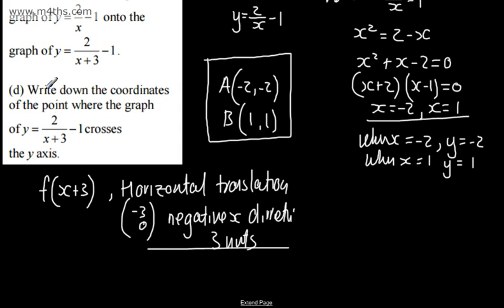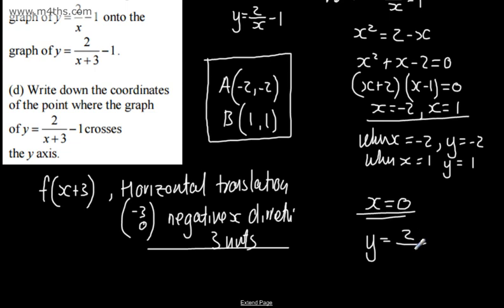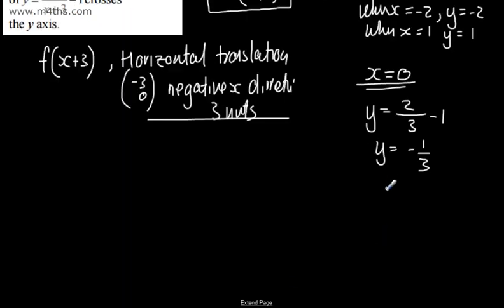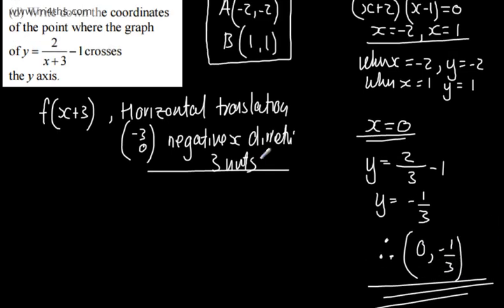In part D, we're asked to write down the coordinates of the point where y = 2/(x + 3) - 1 crosses the y-axis. When it crosses the y-axis, x = 0. So y = 2/(0 + 3) - 1 = 2/3 - 1 = -1/3. Therefore, the point is (0, -1/3). All we've done is substitute x = 0 in.